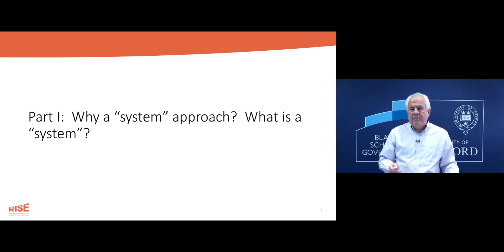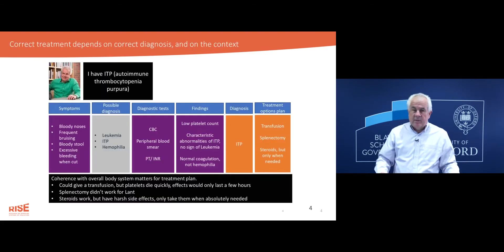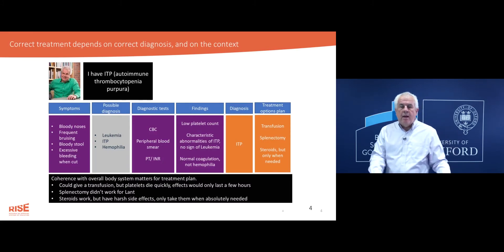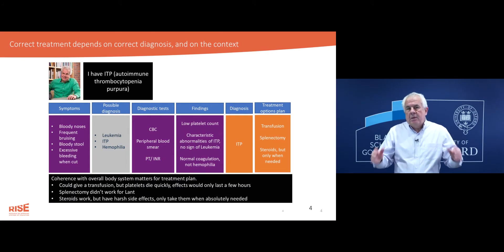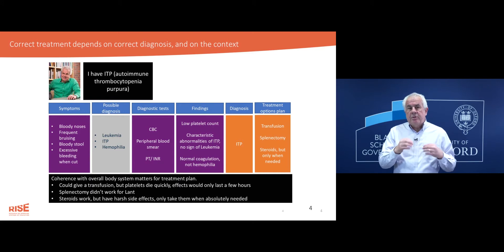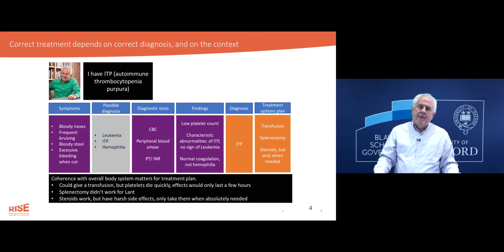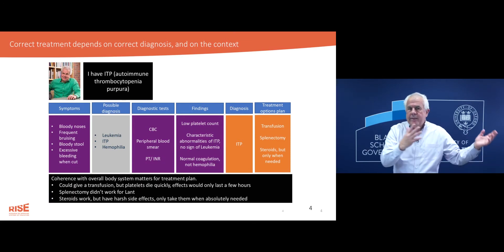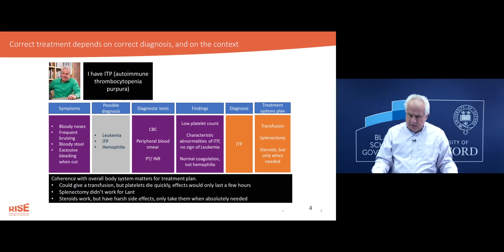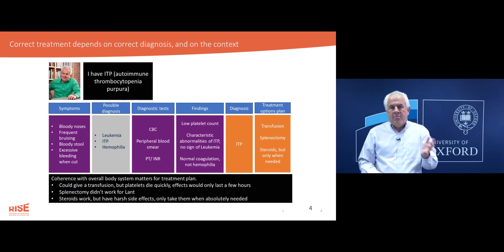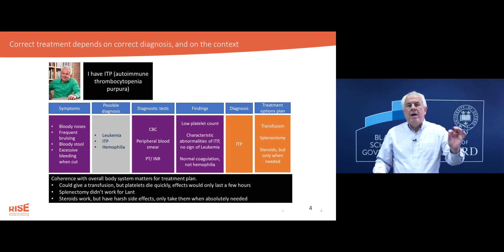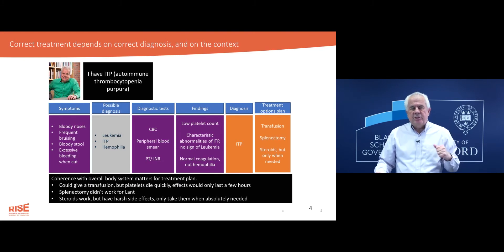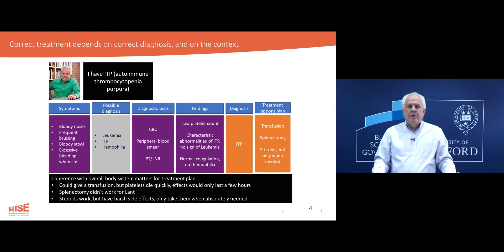I'm going to start by talking about something I know a lot about, which is me. I happen to have a disease called ITP — autoimmune thrombocytopenia purpura. What that means is there are certain cells in my bloodstream meant to stop bleeding. Your platelets are the first line of response that rush to a wound and help coagulate the blood, and I have too few platelets. So if I bump into something accidentally, I get a huge bruise.